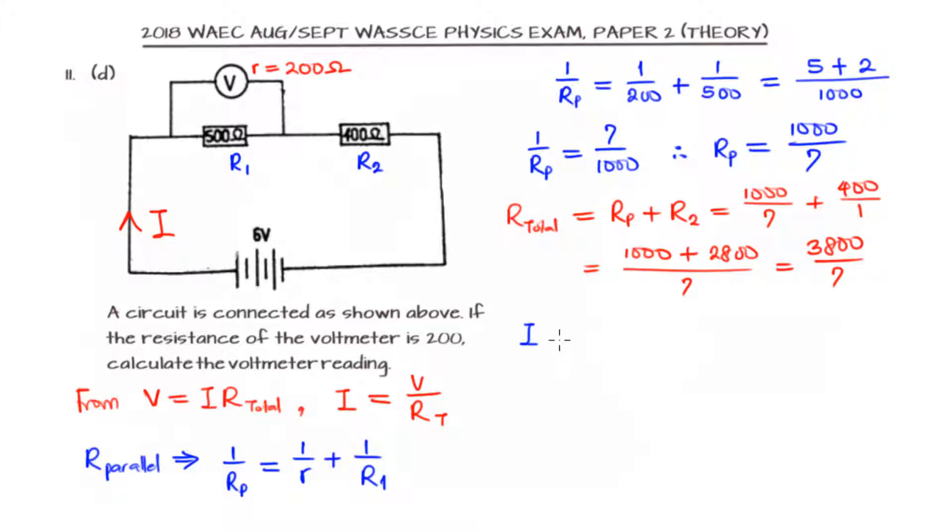From I equals V over Rt, and V is 6 volts, so we have 6 over 1 divided by the R total, which is 3800 over 7.